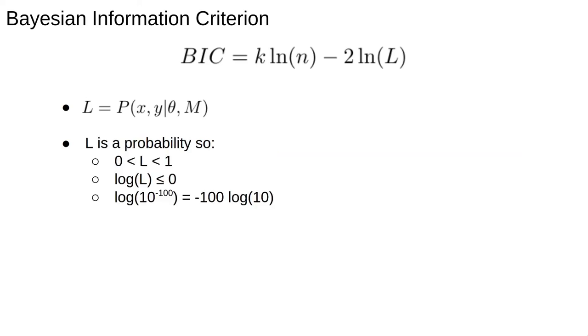Remember, L is a probability, then the maximum value is 1. This means log of L is less than or equal to 0, so the second term will cancel the minus sign and BIC should always be positive. Also, keep in mind that a worse model will have a lower probability, so the log likelihood will be large and negative, and when we multiply by minus 2, this will give a big contribution to the BIC.